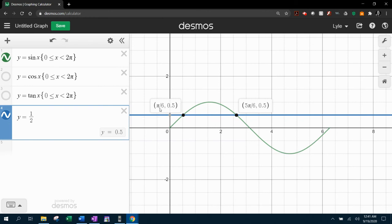And those solutions are pi over six and five pi over six. So that's how you can verify this result with Desmos.